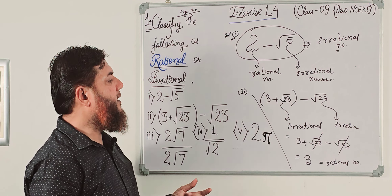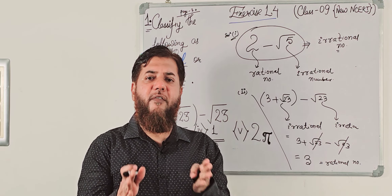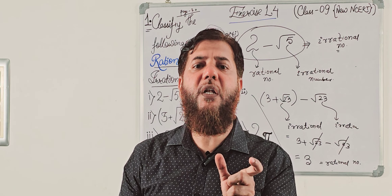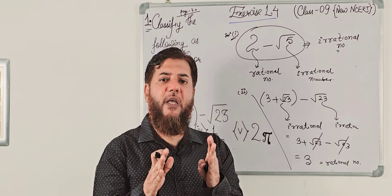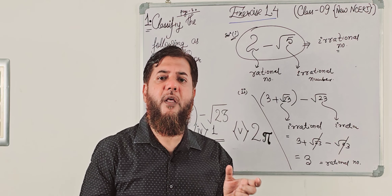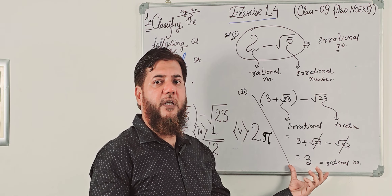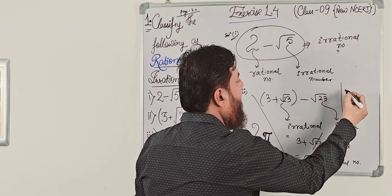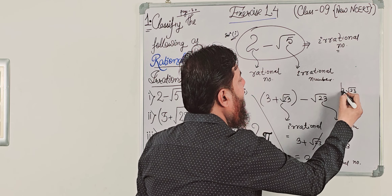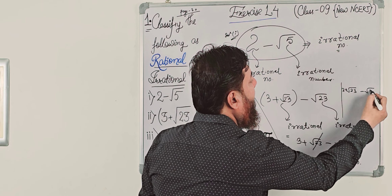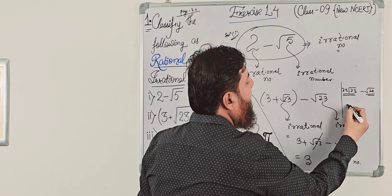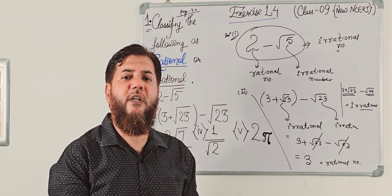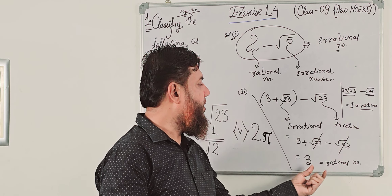So this is rational. Irrational plus or minus irrational may be rational or may be irrational. Here the result is rational. For example, if we had 3 plus root 23 minus root 24, both parts are irrational but the result would also be irrational. So irrational plus or minus irrational may be rational or may be irrational — but in question number 2, it is rational.